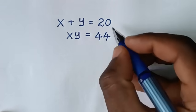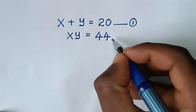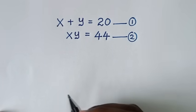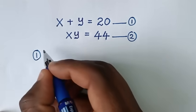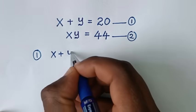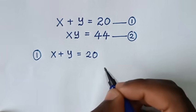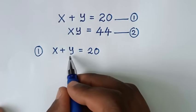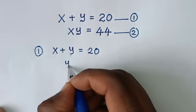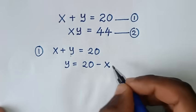In the first step, we start by labeling x plus y equals 20 as equation 1, and xy equals 44 as equation 2. From equation 1, we make y the subject, so we take x to the other side: y is equal to 20 minus x.